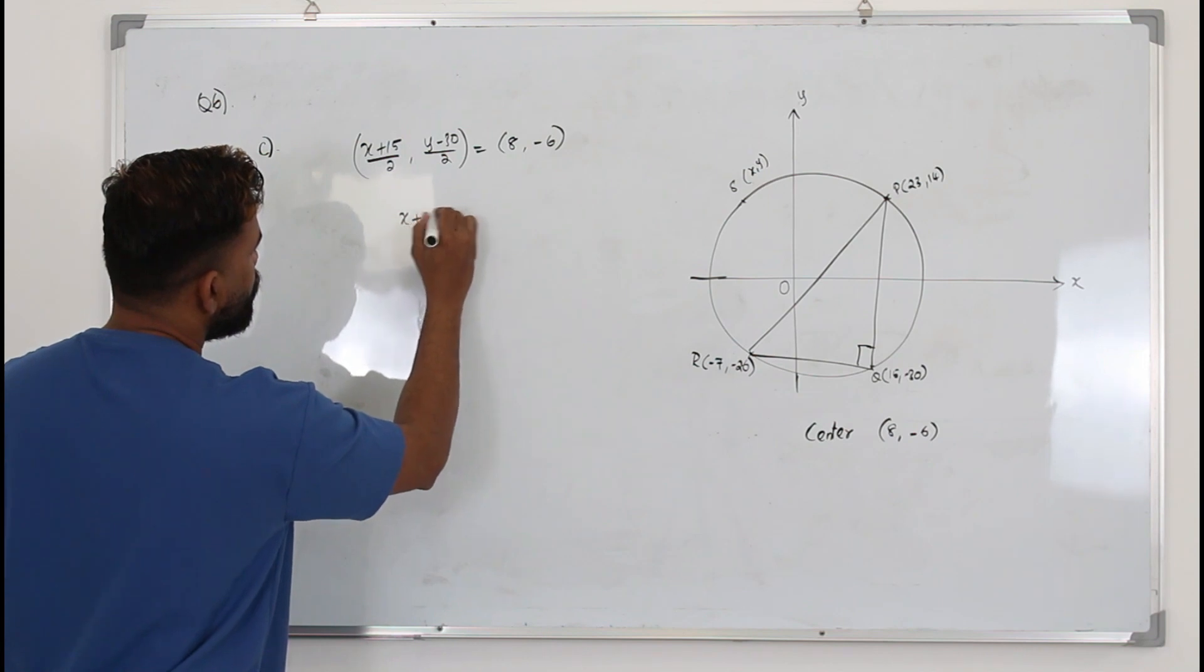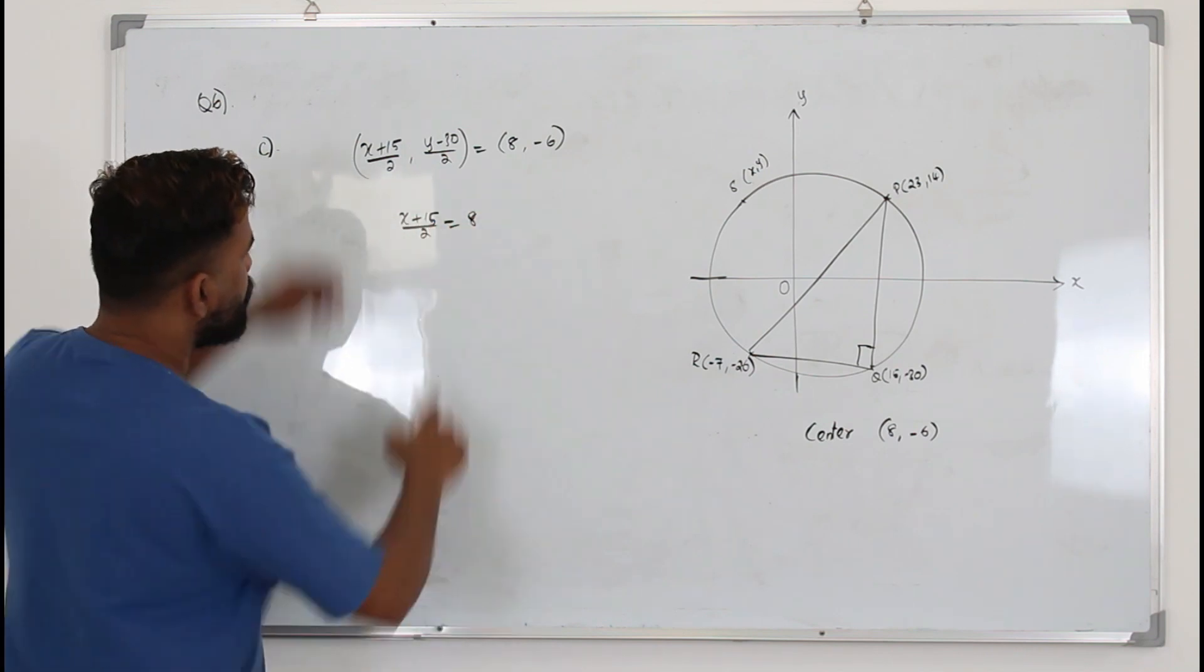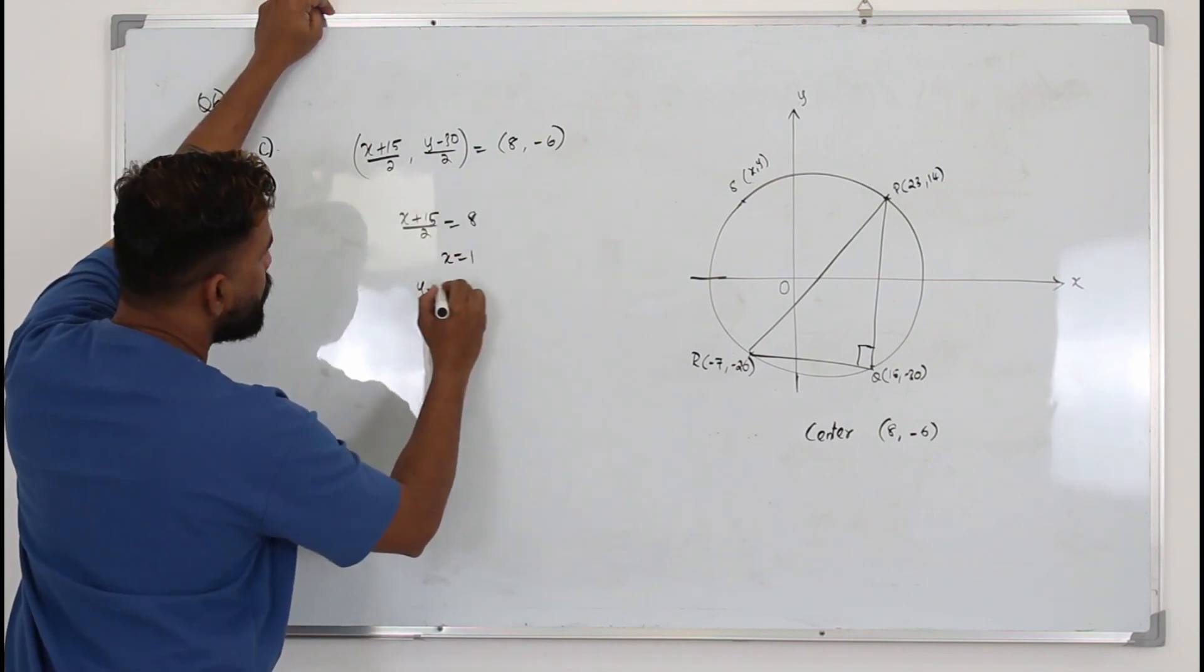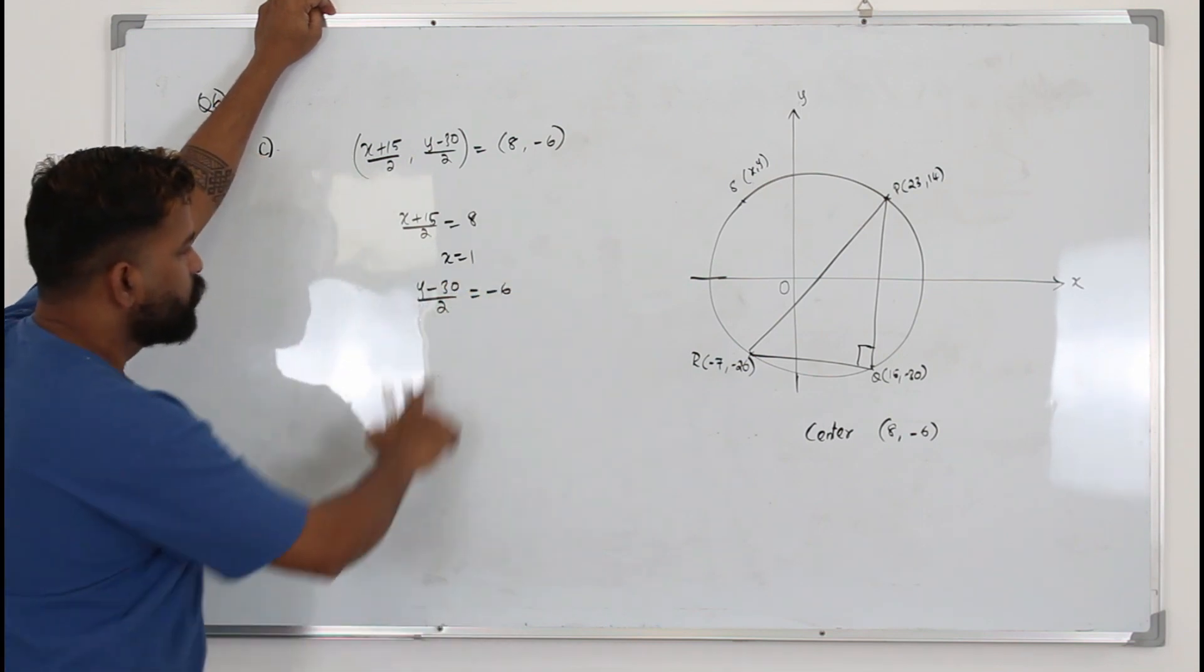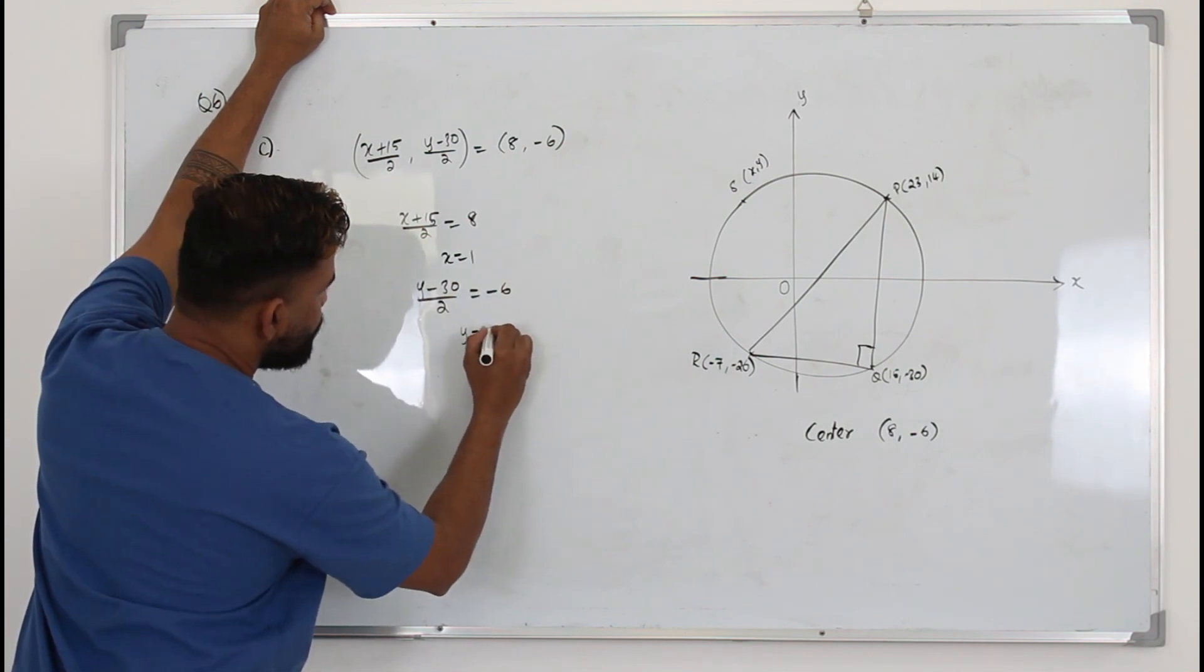X plus 15 over 2 is 8. Make X as a subject. So 16 minus 15, X is 1. And Y minus 30 over 2 is negative 6. 2 comes here negative 12, 30 comes here plus 30, so Y is 18.